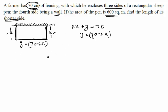So what we have done is we have reduced it to a single variable. Further, the data given to us is the area of the pen is 600 square meters. Area of a rectangle is length into breadth, which means 70 minus 2x into x should be equal to 600.